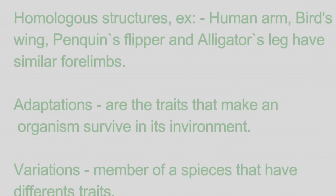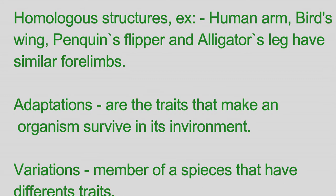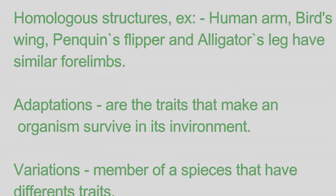Homologous structures. Example: human arm, bird's wing, penguin's flipper, and alligator's leg have similar bone structures. Adaptations are the traits that help an organism survive in its environment. Variations are members of a species that have different traits.